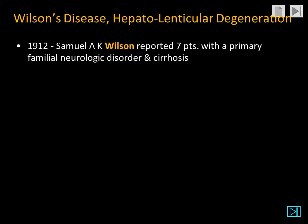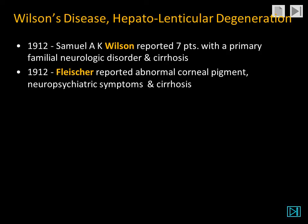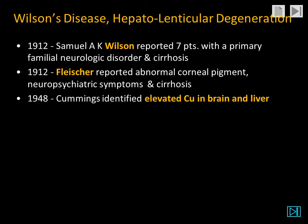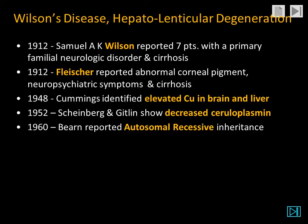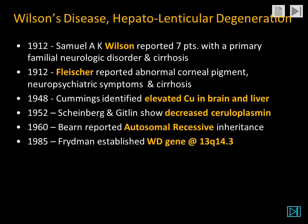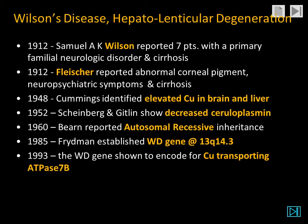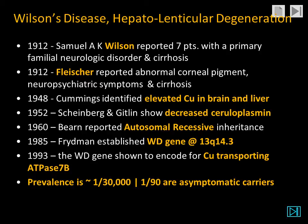So what is Wilson's disease? Wilson, in 1912, reported seven patients with a primary familial neurologic disorder associated with cirrhosis. Fleischer, also in the same year, reported abnormal corneal pigment and neuropsychiatric symptoms associated with cirrhosis. Cummings identified elevated copper in the brain and the liver. Shearing and Gitlin demonstrated decreased serum ceruloplasmin. Byrne reported this disease to be autosomal recessive. Friedman established the gene as being on chromosome 13. And in 1993, the Wilson's disease gene was shown to encode for a copper transporting enzyme, ATPase 7b. The prevalence of this autosomal recessive disorder is approximately 1 in 30,000, but about 1 in 90 people are asymptomatic carriers of the heterozygous state.